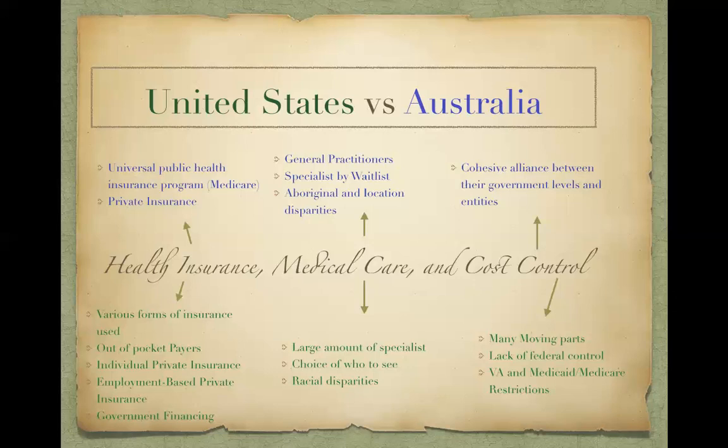Sometimes to combat this, 57% of Australians choose to get private health insurance, which can supplement allied health services, optometry, and dental, as well as allow them access to private hospitals and reduce the wait times on the list. Typically here in America, our insurance plans include dental and vision, while in Australia they do not — it is something extra.